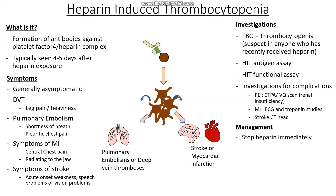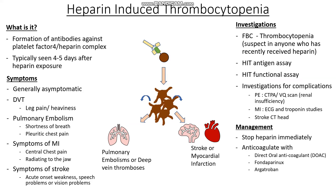For management, since this is triggered by heparin, the first thing to do immediately is stop the heparin. The second step is to anticoagulate with a non-heparin anticoagulant — things like direct oral anticoagulants such as apixaban, rivaroxaban, or dabigatran. We may also use fondaparinux if that wasn't the trigger, or argatroban. A very important point: do not use a vitamin K antagonist like warfarin, as there is a high risk of limb gangrene and skin necrosis.